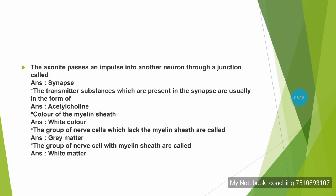The color of the myelin sheath is white, as it is made of fat molecules. The group of nerve cells which lack the myelin sheath forms the gray matter.